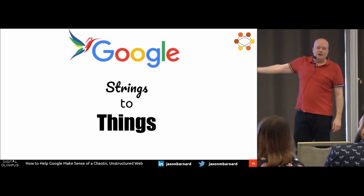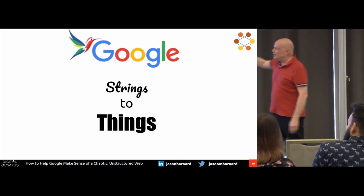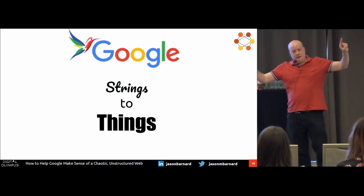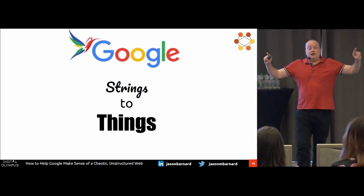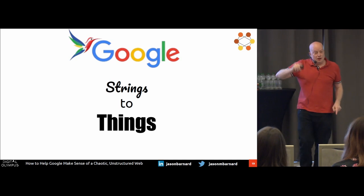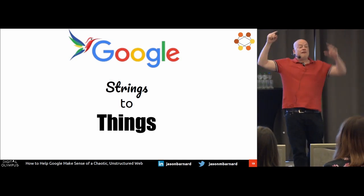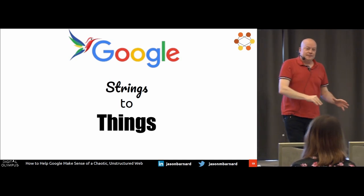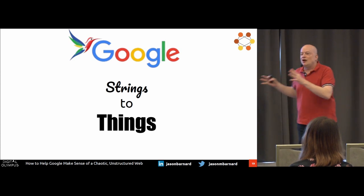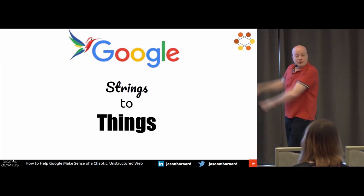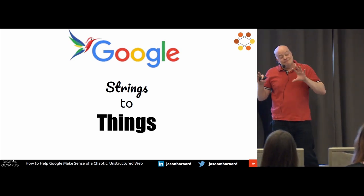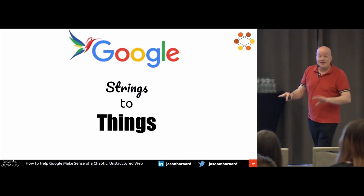You've all seen this — strings to things. It doesn't really mean very much until you think: strings — what were Google doing? They were analyzing character strings. Now they're thinking in terms of objects, entities, saying: I want to understand the world. So you can take away from this first part — it's a little bit complicated maybe.